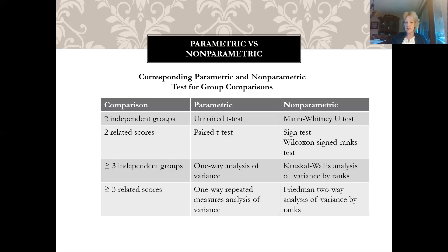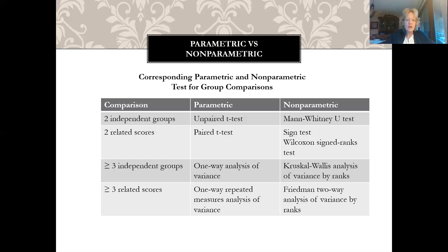The sign test can be used with categorical data, but the Wilcoxon signed rank test requires ordinal data. For a design with three or more independent groups, you use the one-way analysis of variance as a parametric test, and the Kruskal-Wallis analysis of variance by ranks for non-parametric.